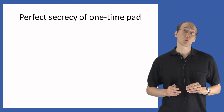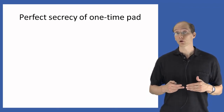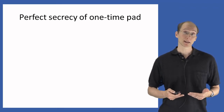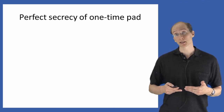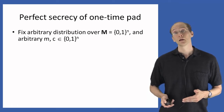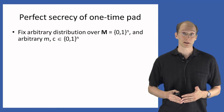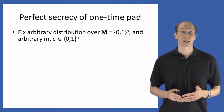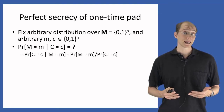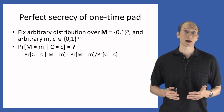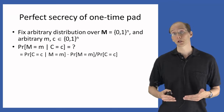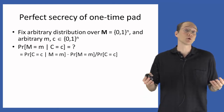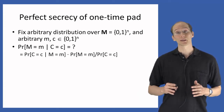Now we want to prove that the one-time pad is perfectly secret. To do this, we need to show that no matter what distribution on the messages we start with, for any message and any ciphertext, the probability that the message equals m conditioned on observing that ciphertext is exactly equal to the a priori probability that the message equals m. Let's fix some arbitrary distribution over the message space and fix some arbitrary message m and ciphertext c. The message space and ciphertext space are both the set of all n-bit strings.